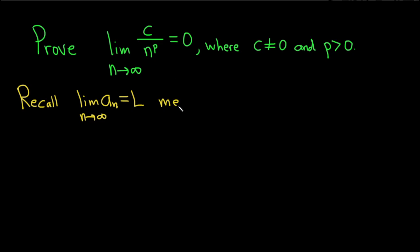This means, using shorthand notation, for all epsilon greater than 0, there exists an integer N in the set of positive integers.